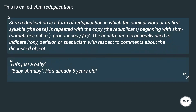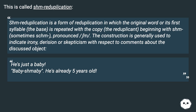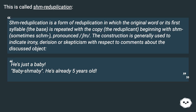This is called SHM reduplication. SHM reduplication is a form of reduplication in which the original word or its first syllable — the base — is repeated with the copy, the reduplicant, beginning with SHM (sometimes SCHM). The construction is generally used to indicate irony, derision, or skepticism with respect to comments about the discussed object.